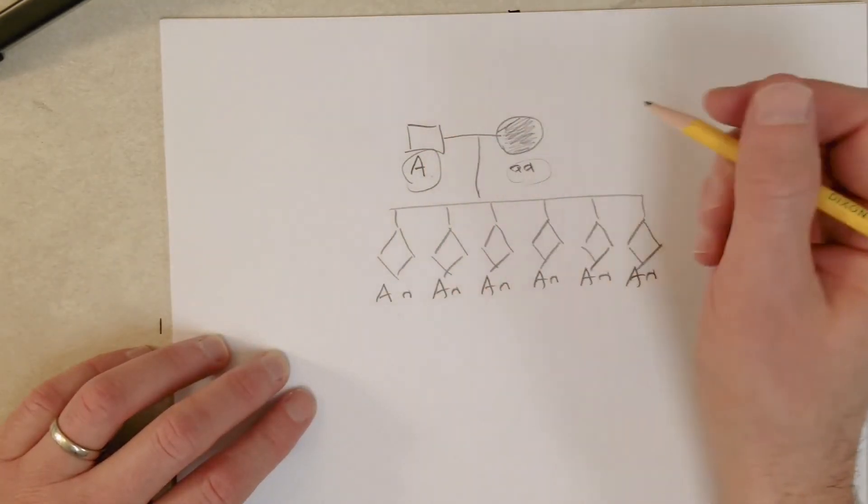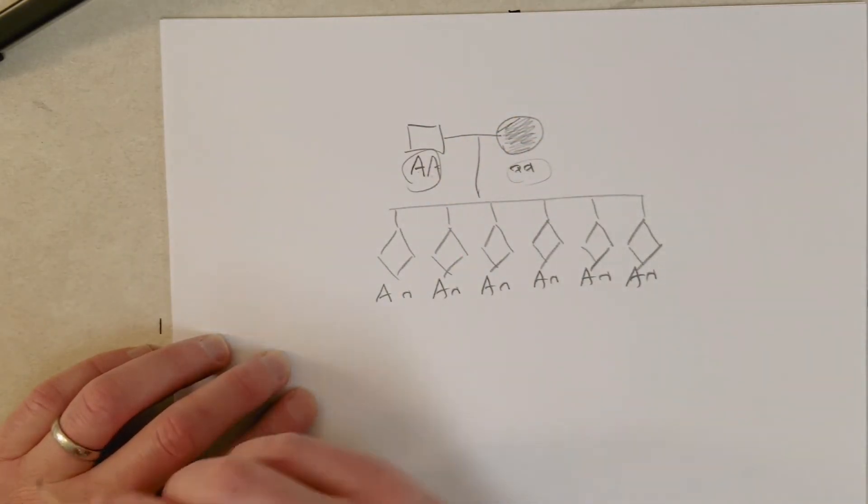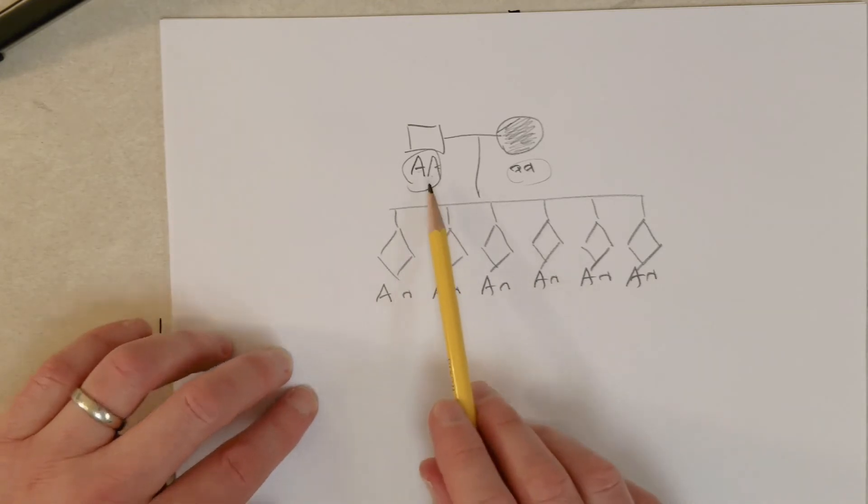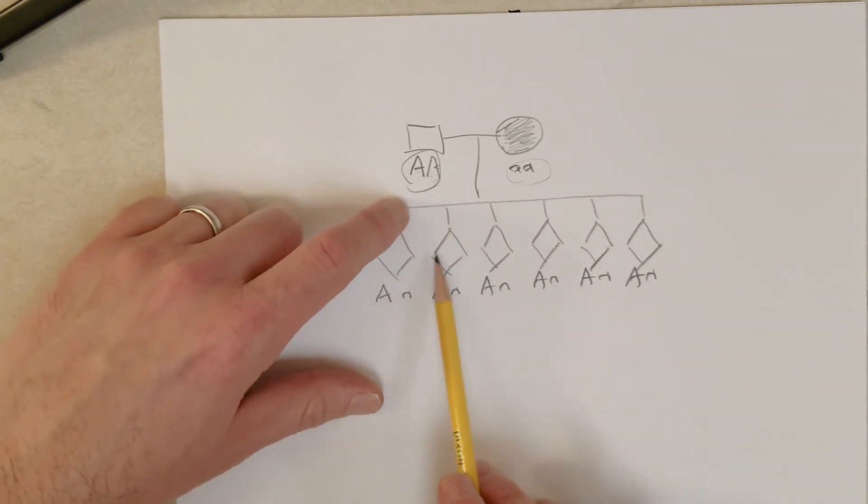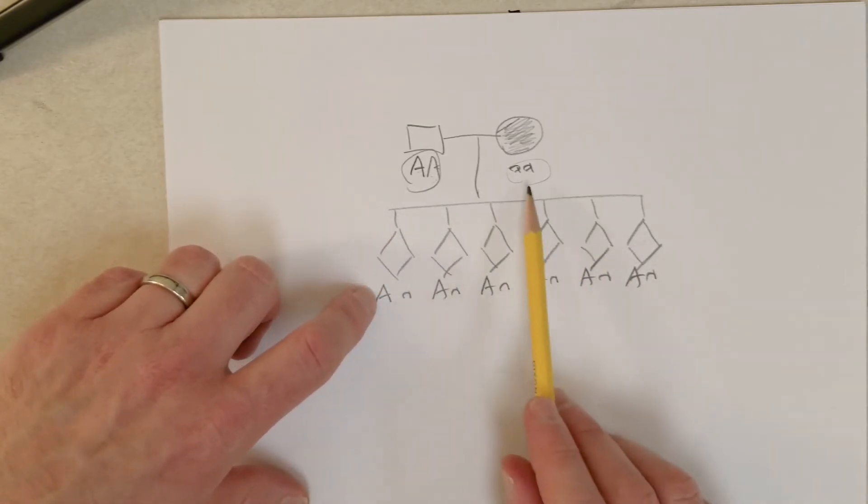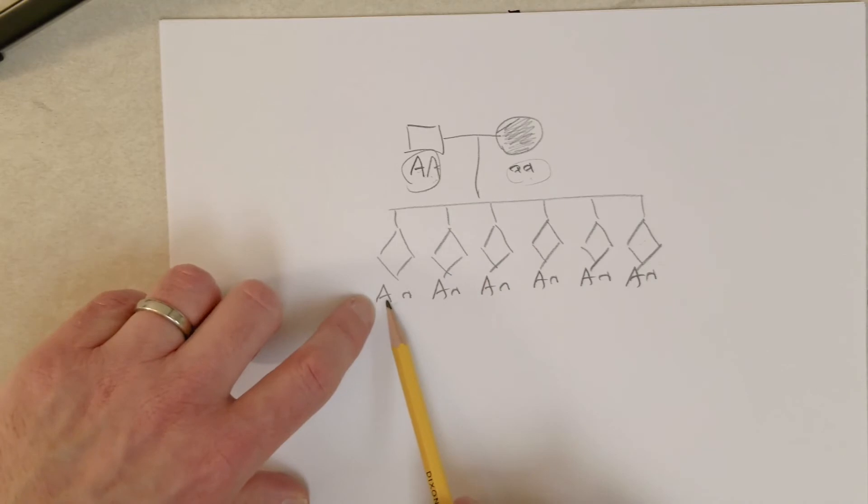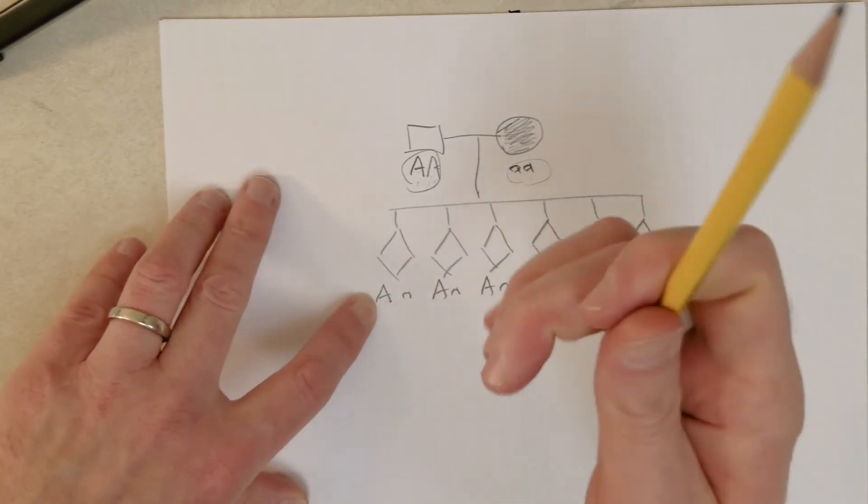The dad, you know, it's most likely big A big A because none of the kids inherited a small a from the dad. They all got a small a from mom, they all got a big A from the dad, and the easiest way for that to happen is for the dad to only have big A alleles to give.